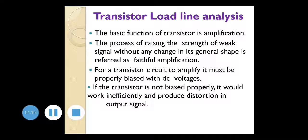For a transistor circuit to amplify, it must be properly biased with DC voltage — this is most important. Biasing means connecting voltage sources to the transistor; normally we connect two voltage sources, one on the input side and one on the output side. The value of the power supply is very important. If not set correctly, the transistor will enter cutoff mode, saturation mode, or active mode. For the transistor to work as an amplifier, it must always be in the active mode. If the transistor is not biased properly, it will produce distortion in the output signal.